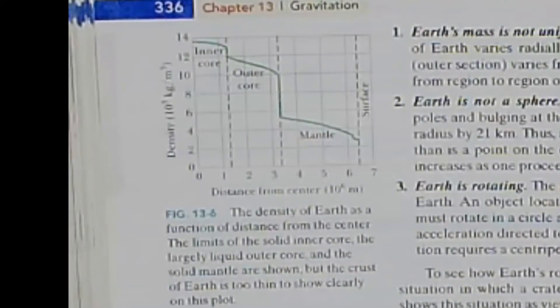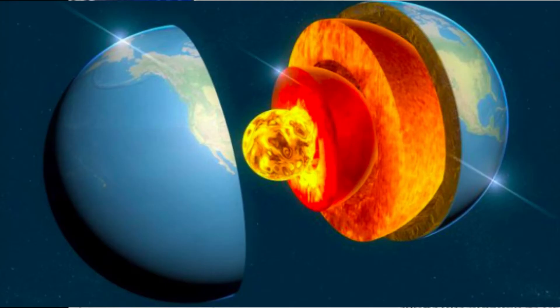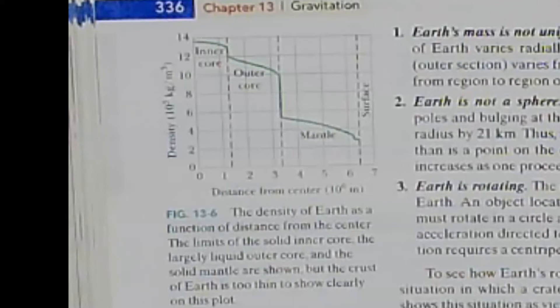Number one, the density of Earth varies radially as shown here in this figure. And the density of the crust, that's the outermost layer of the Earth, it varies from region to region over Earth's surface. Thus, g varies from region to region over the surface. The crust of Earth is too thin to show clearly on this graph.